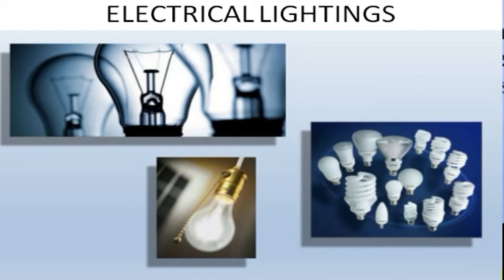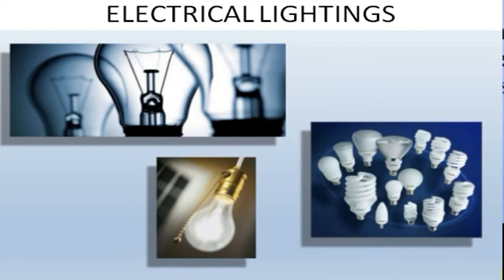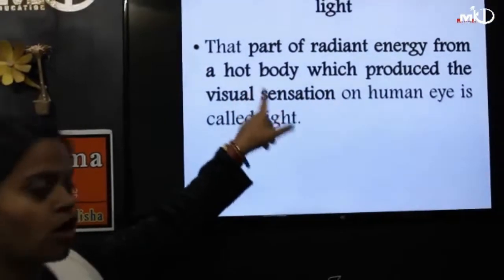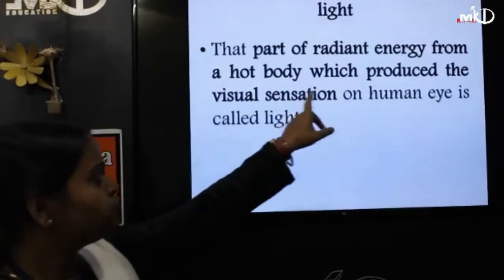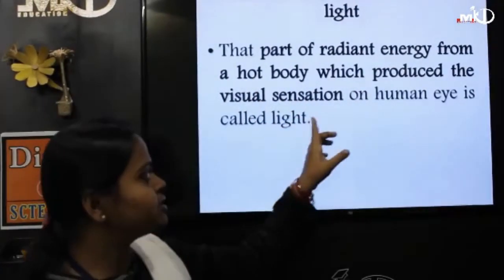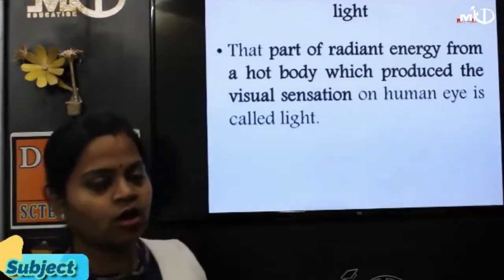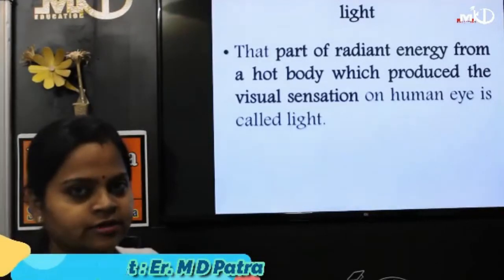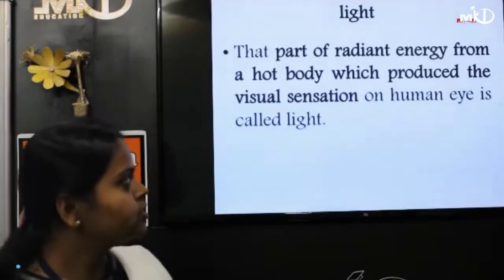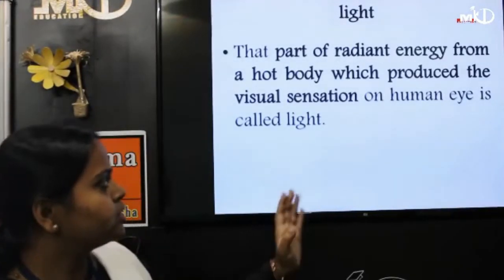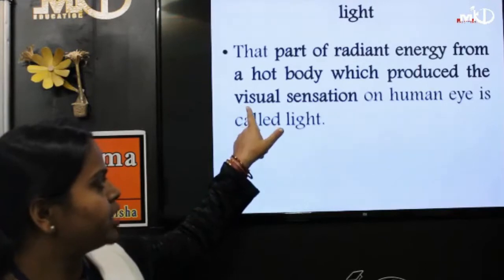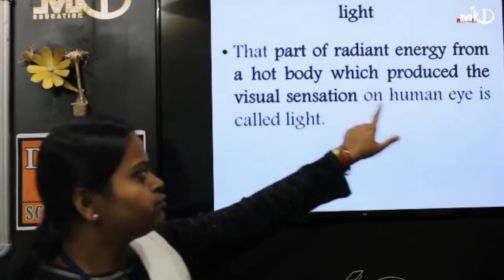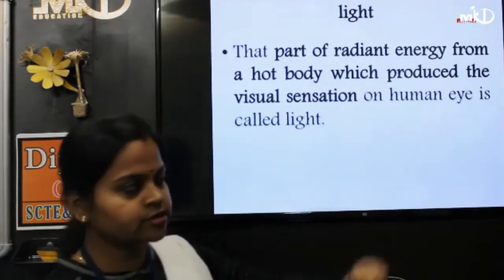So what do you mean by light? The part of radiant energy from a hot body which produces the visual sensation on human eyes is called light. This is the definition of light — it is the result of visual sensation on the human eyes.